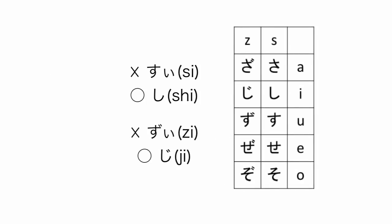Instead of saying ずい, we say じ. Originally, the すい and ずい sounds did not exist in Japanese.